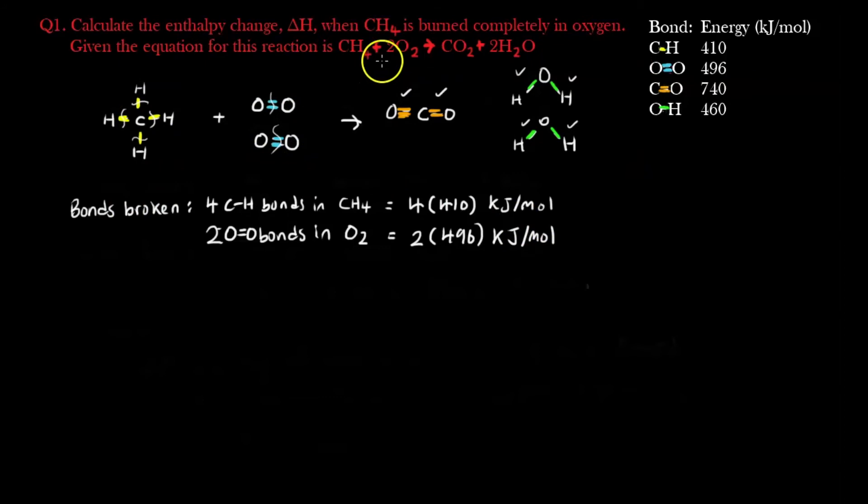Now let's talk about the bond formation, which are the products. So bonds formed, we can see that we have to form 2 bonds of C double bond O, 1 here and 1 here, and 1 of them requires 740 kJ per mole to form, so we need 2 of them, 2 C double bond O bond in CO2 carbon dioxide. This requires us 2 times 740 kJ per mole.